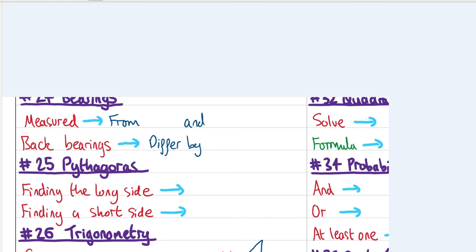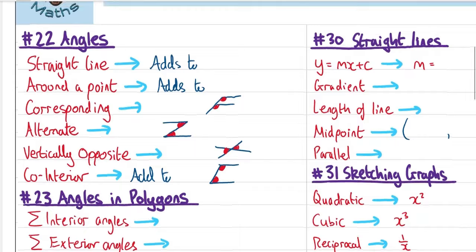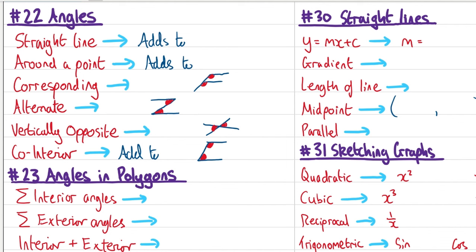Number 22: angles. Angles along a straight line add to 180. Angles around a point add to 360. Corresponding angles (F-shape) are equal. Alternate angles (Z-shape) are equal. Vertically opposite angles (X-shape) are equal. Co-interior angles (C-shape) are not equal but add to 180.